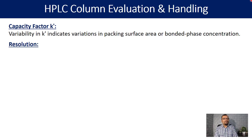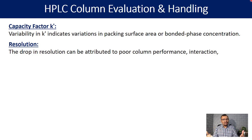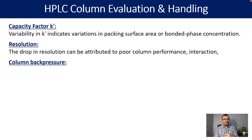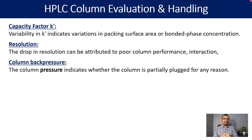Resolution is one of the very key aspects of chromatographic separation. A drop in resolution can be attributed to poor column performance or lower interaction, and this is a key reason why you often have to change the column. Column back pressure always limits usage beyond a certain pressure. The column pressure indicates whether the column is partially plugged — especially when using mobile phases containing buffers — and if there is microbial growth on the frit or inside the stationary phase, column back pressure can certainly get high.